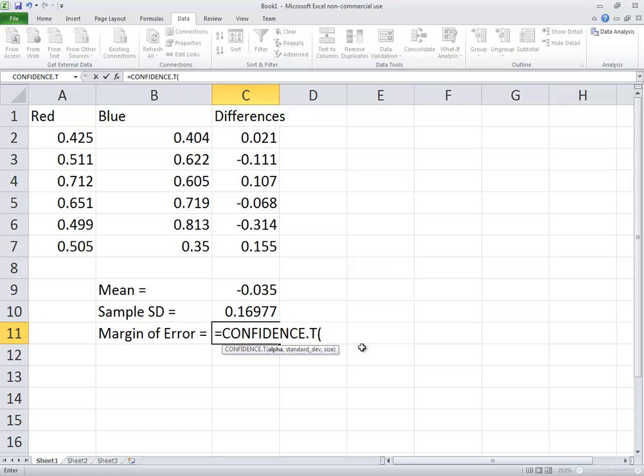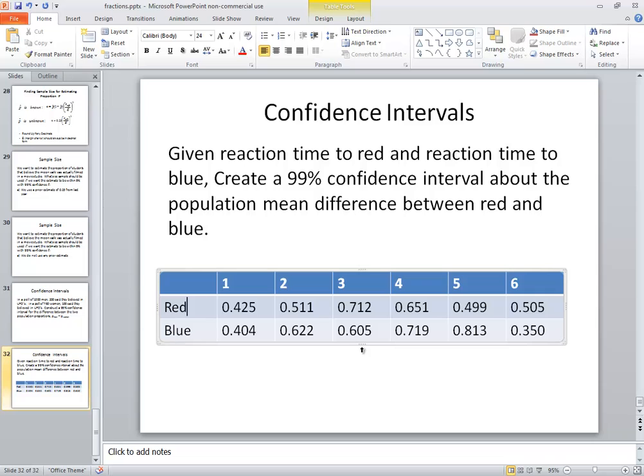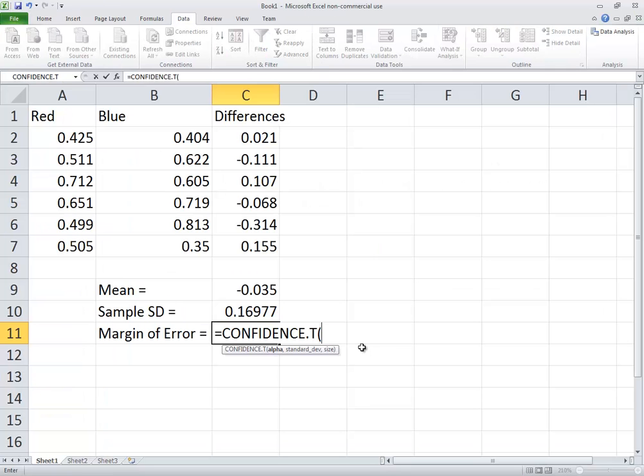Now, it's asking us for alpha. And we said we're creating a 99% confidence interval. So we're going to put in the 1%. So we'll put in 0.01, comma, and it's asking us for standard deviation. Well, standard deviation we put in cell C10. So I'll put C10 there, comma, and then the size. Well, there's six of them. So I'm going to hard code six, and then closing parentheses. And then press enter.